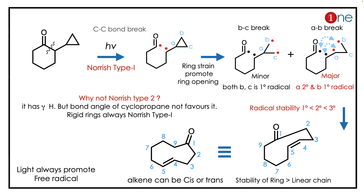First, diradical formation happens, then the three-membered ring is opened due to strain. The radical is then quenched by bond formation. The radical forms a cyclic product because the cyclic compound is more stable than the non-cyclic compound.